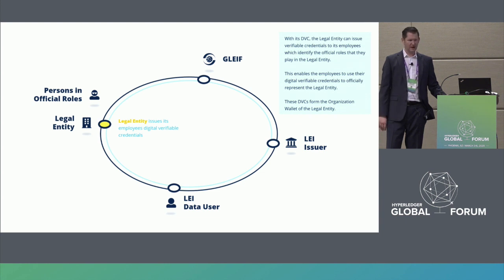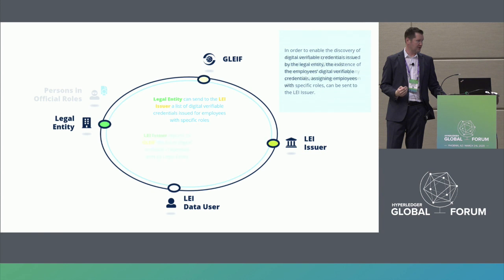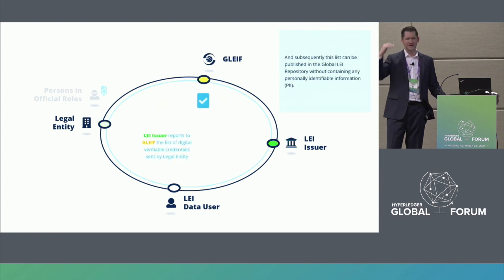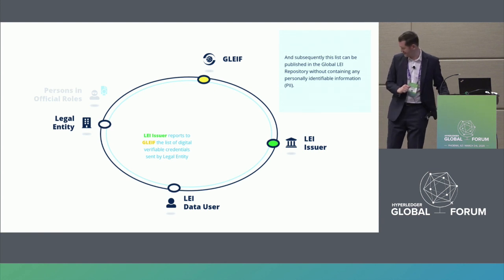Now everybody has their verifiable credentials. There would be the potential to have a register where legal entities report back their issued credentials to their LEI issuer in this federated system. The LEI issuer could aggregate that and report it back to GLEIF, which already has the so-called Global LEI Index — a central register of legal entities. There could also be a look-up functionality for these publicly discoverable roles.